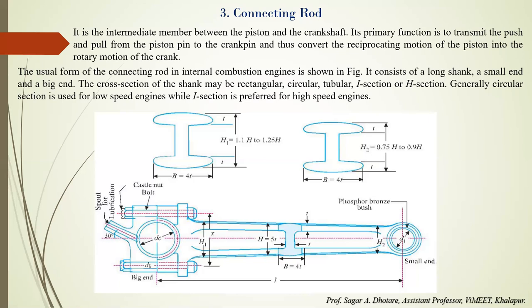Regarding cross section: for low speed engines, the section is usually cylindrical, elliptical, or rectangular, with the larger dimension in the plane of rotation. For high speed engines, reduction in weight is a major objective, so the I-section or H-section is commonly used. Generally, the I-section is used for better resistance against bending as well as buckling.